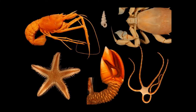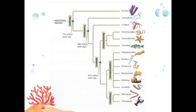Similar to last week's lab, in this week's lab you'll be learning about invertebrates. The invertebrates covered last week belong to the phyla Mollusca and Arthropoda. Those animals are protostomes. In this week's lab, you'll be learning about six other phyla of invertebrates.